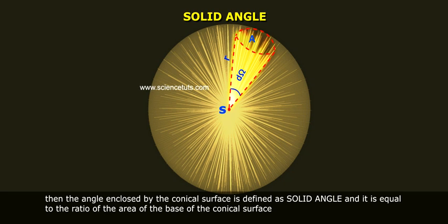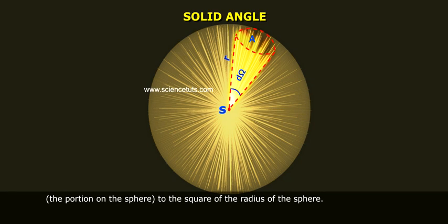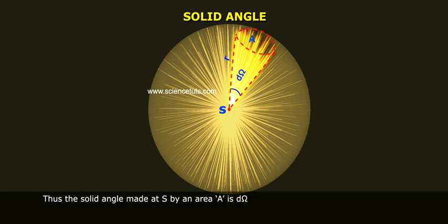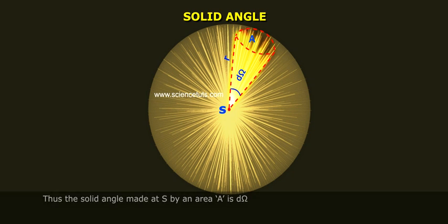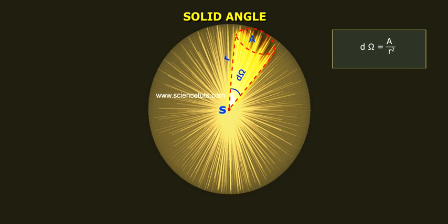The area of the base of the conical surface is the portion of the sphere. Thus the solid angle made at S by an area A is d omega. Therefore, d omega is equal to A by r square.